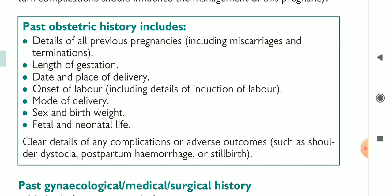Past obstetric history includes details of all previous pregnancies — miscarriages, terminations, length of gestation, date and place of delivery, onset of delivery, details of induction of labor, mode of delivery, sex and birth weight, fetal and neonatal outcome, and details of any complications such as shoulder dystocia and postpartum hemorrhage. Shoulder dystocia is a condition in which the shoulder gets fixed in the pelvic cavity during delivery.